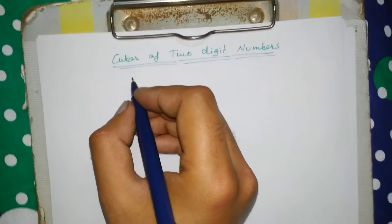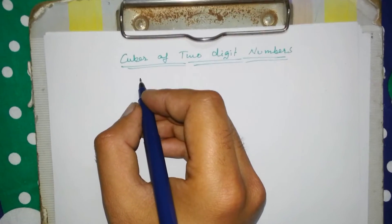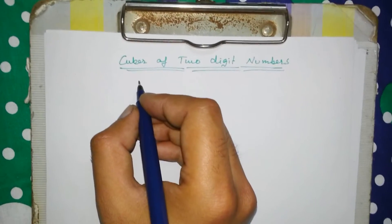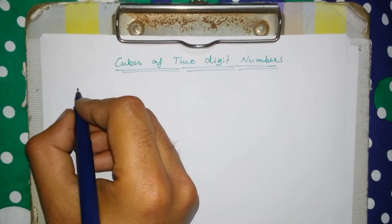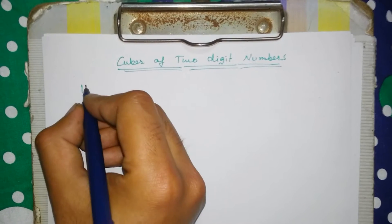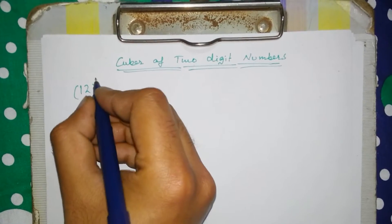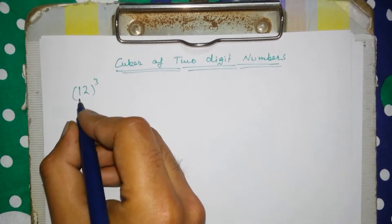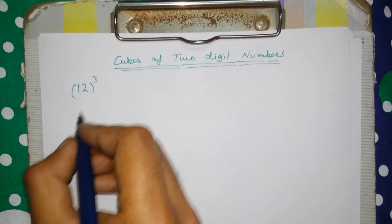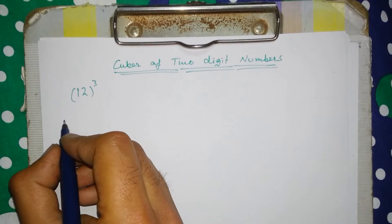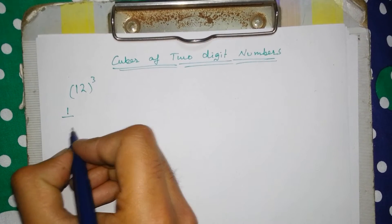Today we will learn cubes of two-digit numbers. We will first do the cube of 12. 12 has two digits, 1 and 2. We will take the first digit as the cube of 1, and that is 1.